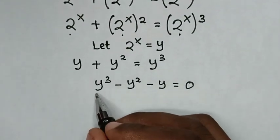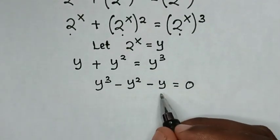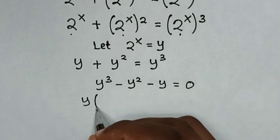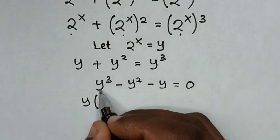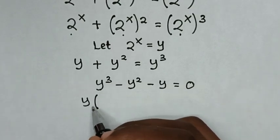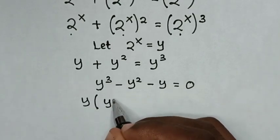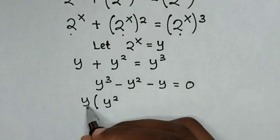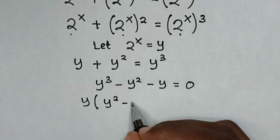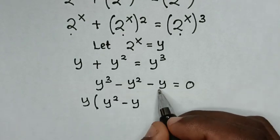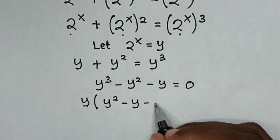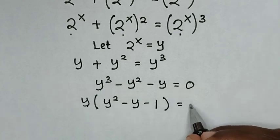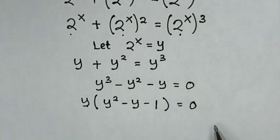In this equation, y is common, so we take y out of the bracket. y cubed divided by y is y squared, negative y squared divided by y is negative y, and negative y divided by y is negative 1. So we get y times bracket y squared minus y minus 1 bracket is equal to 0.